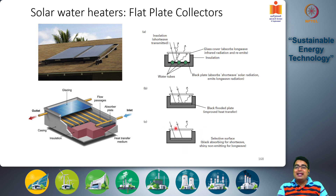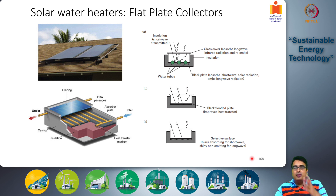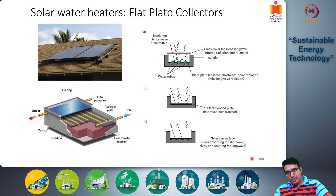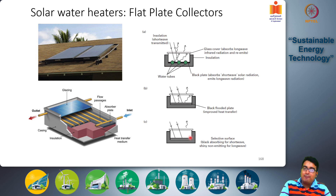A further improvement is the use of a selective surface on the absorber plate. A selective surface is very good at absorbing short-wave visible light radiation but does not emit infrared long-wave radiation. Unlike an ordinary black plate, which both absorbs short-wave and emits long-wave radiation, the selective surface eliminates this radiative heat loss, so heat is retained better and the fluid temperature increases more effectively.